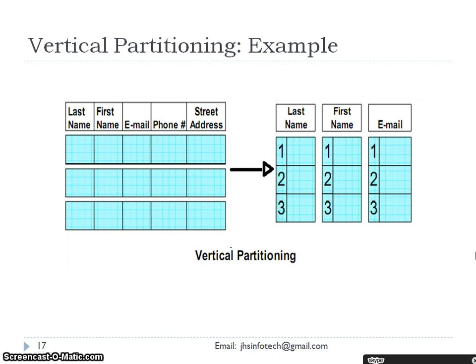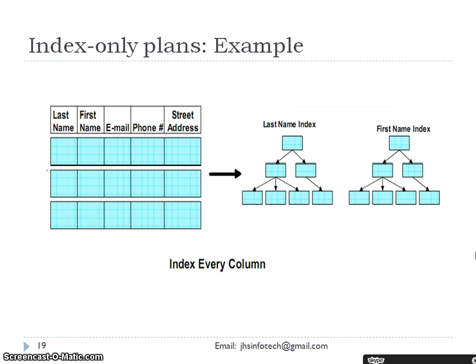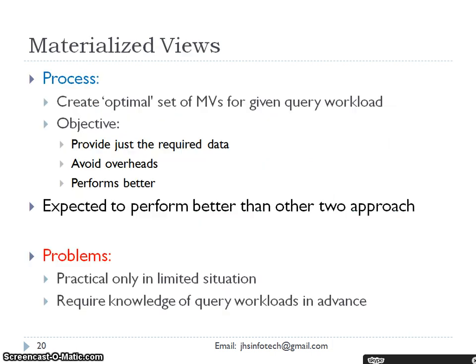When we do vertical partitioning, the row storage looks like what is shown on the left side, and after partitioning it looks like what is shown on the right side. Index-only plans add a B+ tree index for every table column; plans never access the actual tuples on disk, so headers are not stored and per-tuple overhead is less. However, separate indices may require a full index scan, which is slower. Index-only plans work similarly to storing a repeated last name once and reusing it. Materialized views are also an approach used here.